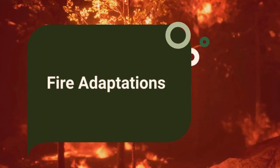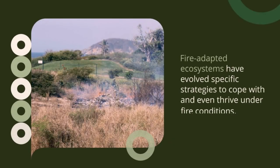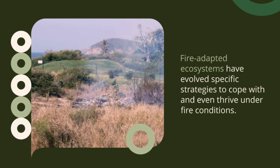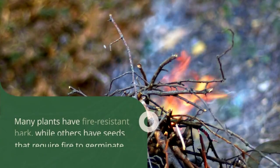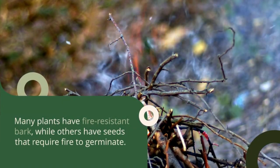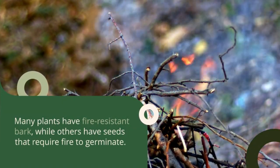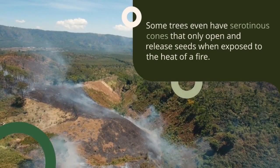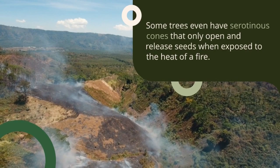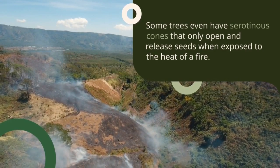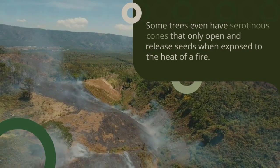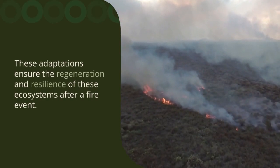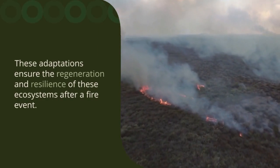Fire-adapted ecosystems have evolved specific strategies to cope with and even thrive under fire conditions. Many plants have fire-resistant bark, while others have seeds that require fire to germinate. Some trees even have serotinous cones that only open and release seeds when exposed to the heat of a fire. These adaptations ensure the regeneration and resilience of these ecosystems after a fire event.